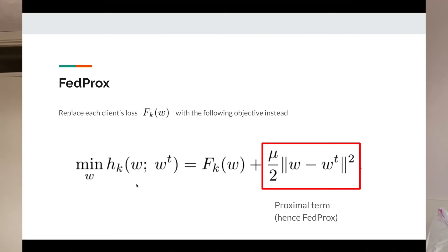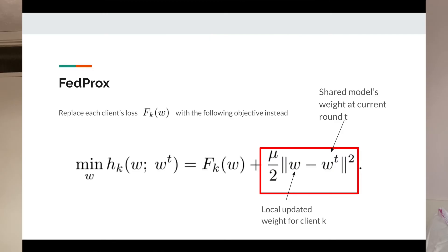The first improvement, FedProx, allows devices to do variable amounts of work. Naively, you might think this favours devices that can run more stochastic gradient descent in the same amount of time, thereby changing their model weights much more. So FedProx introduces a regularisation term — a proximal term — that penalises large changes in weight. This also helps convergence on highly heterogeneous data, as the proximal term penalises the model from changing too much on any single device. We control the amount penalised by the hyperparameter mu.